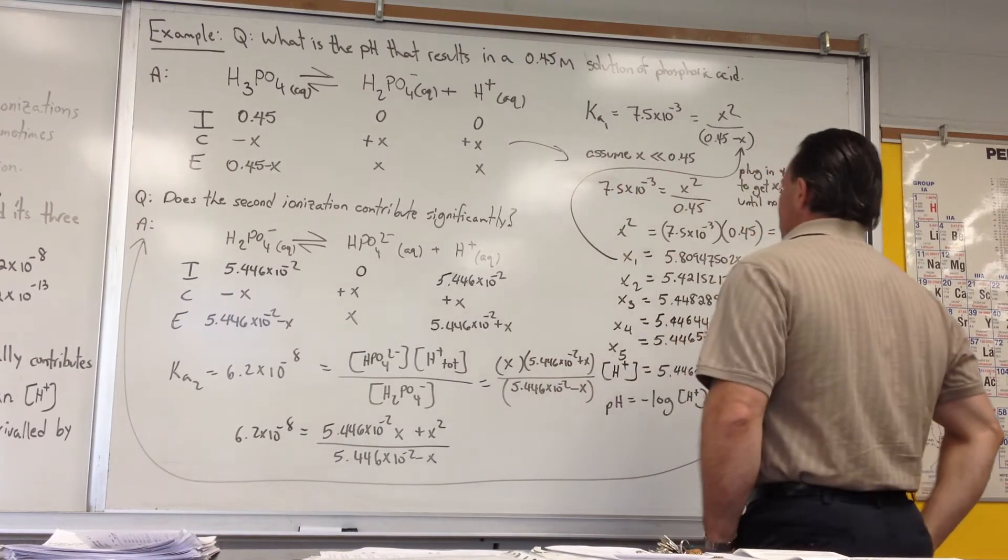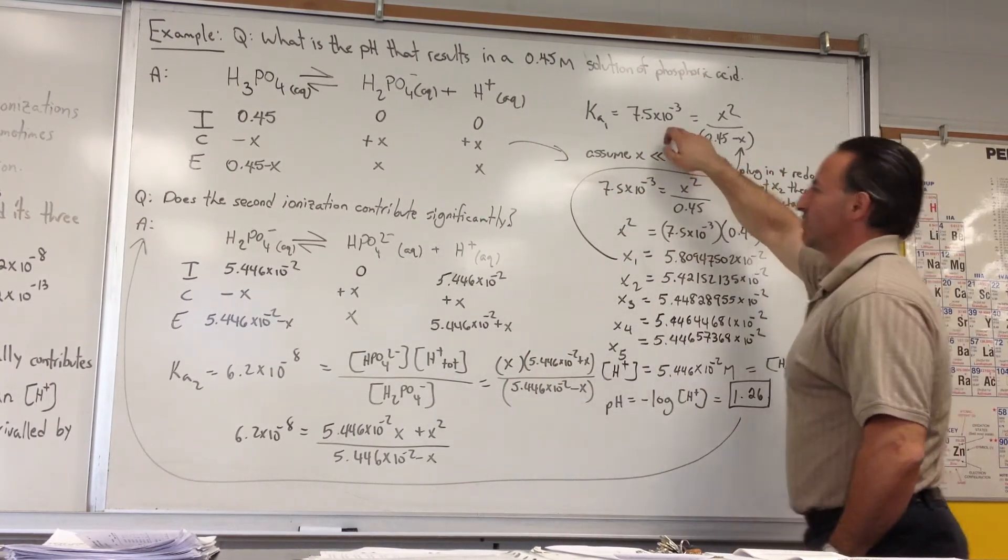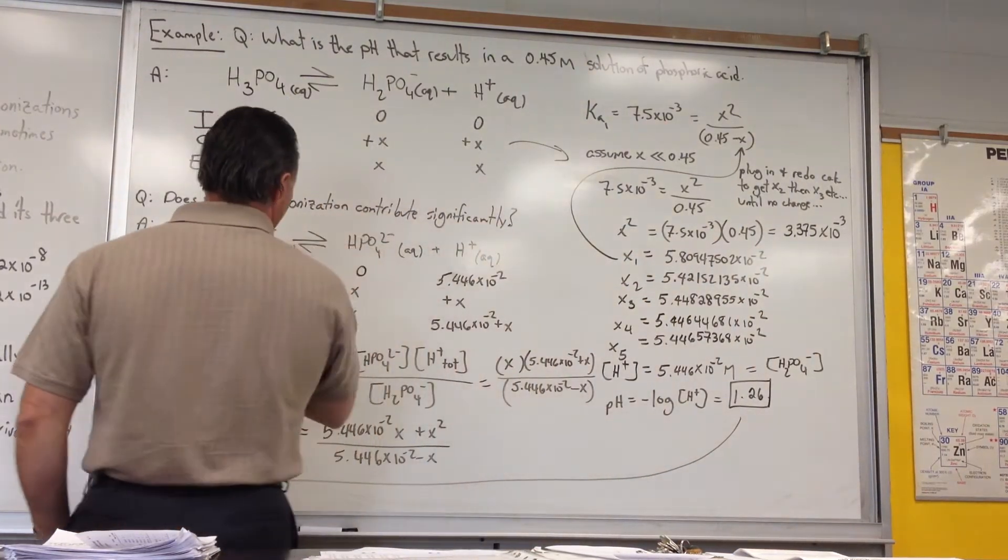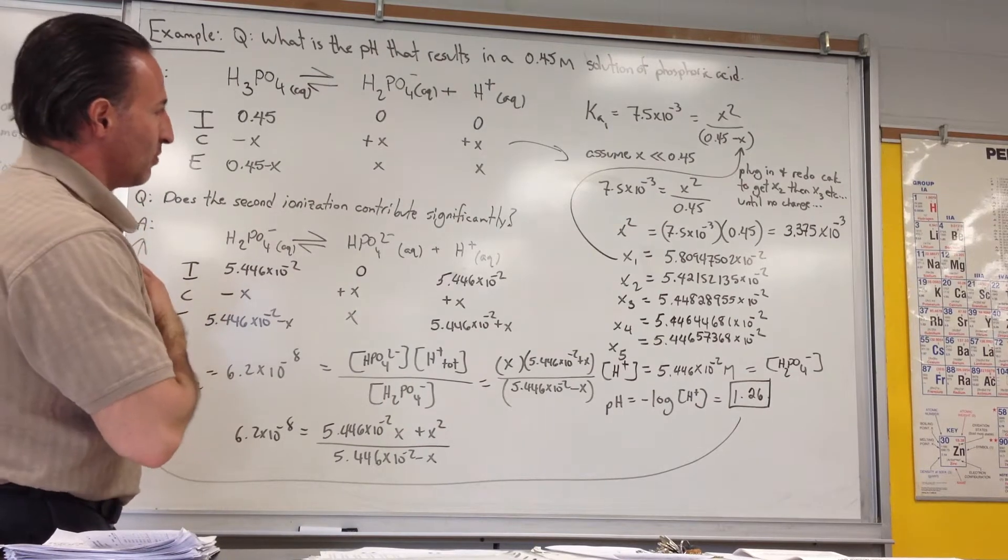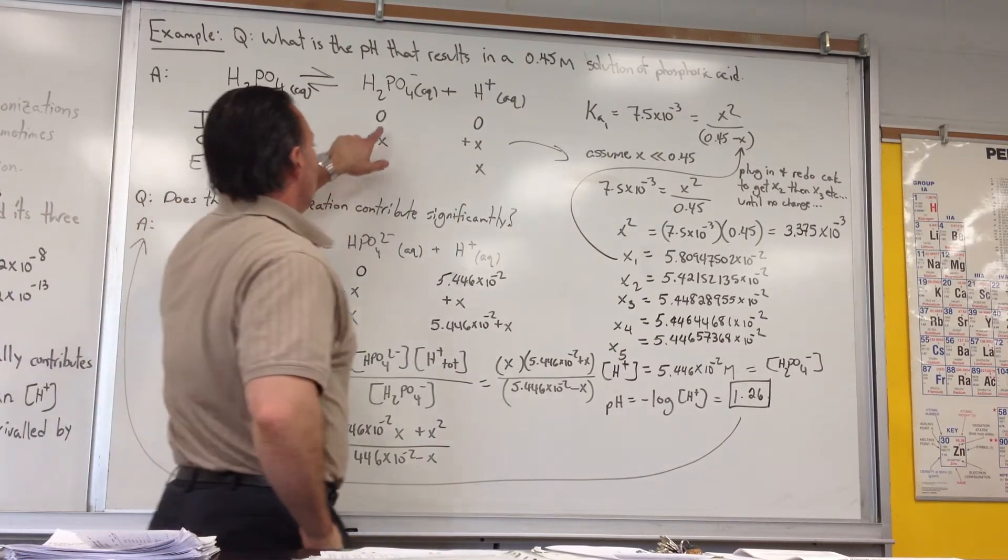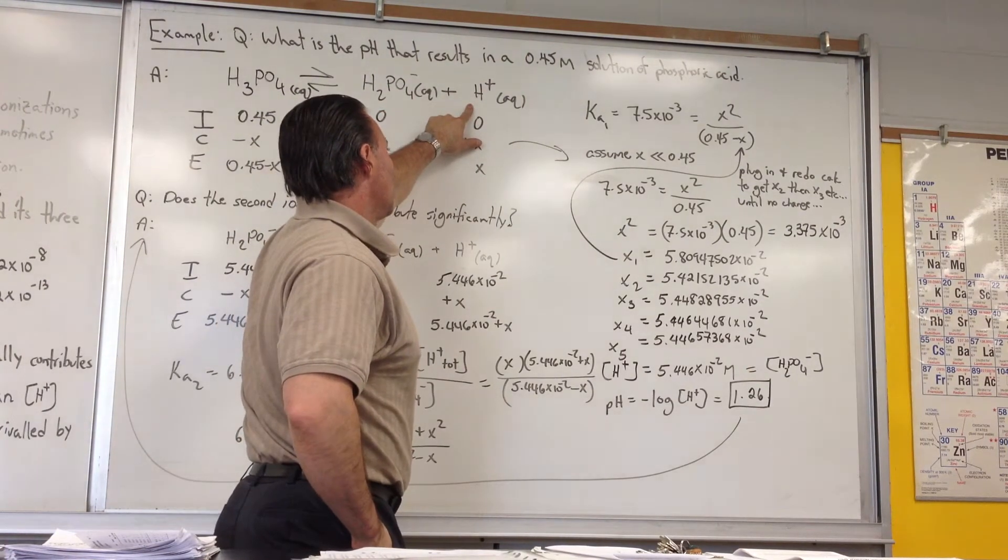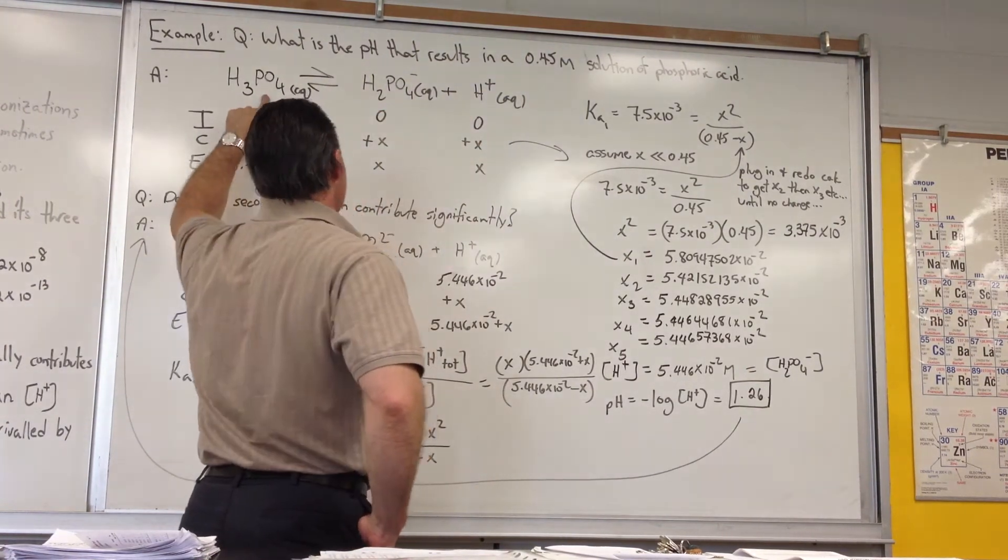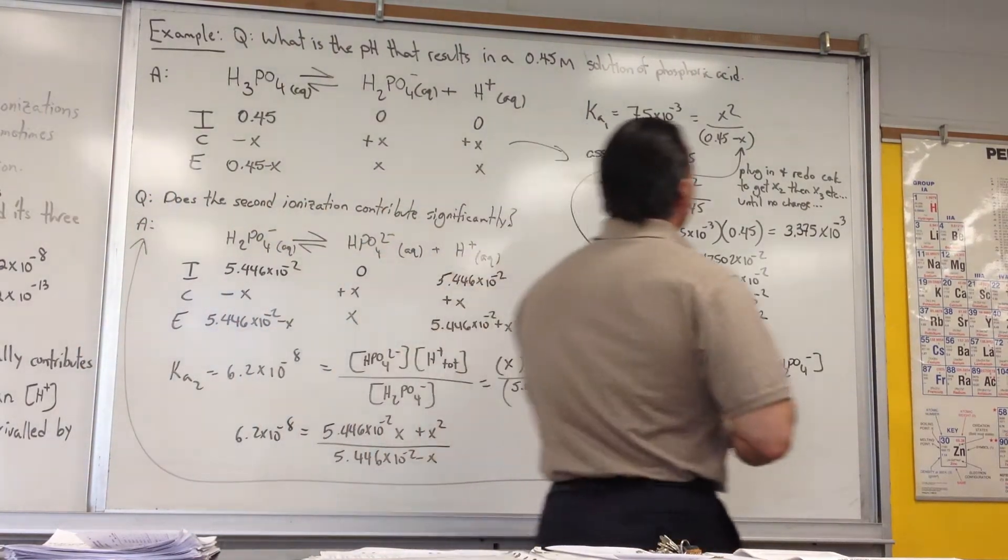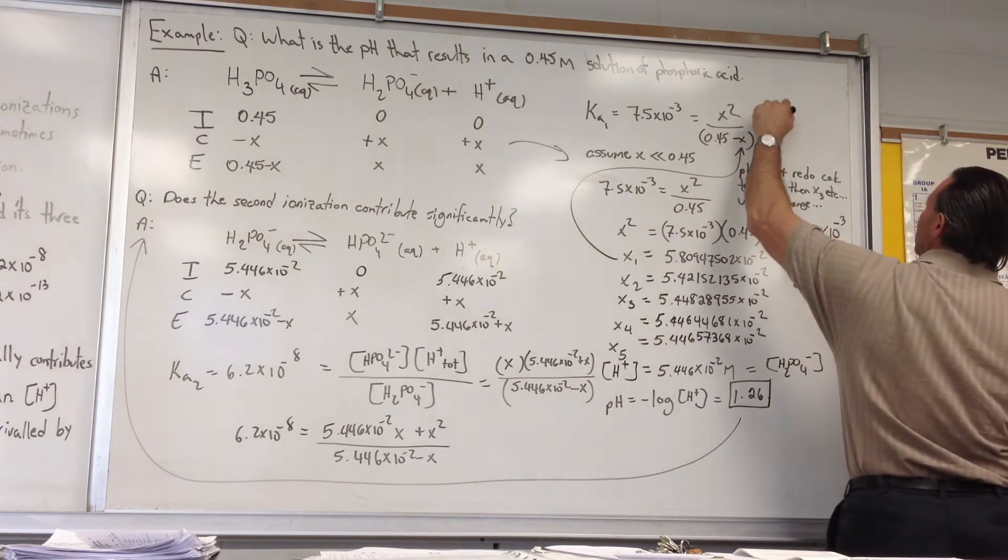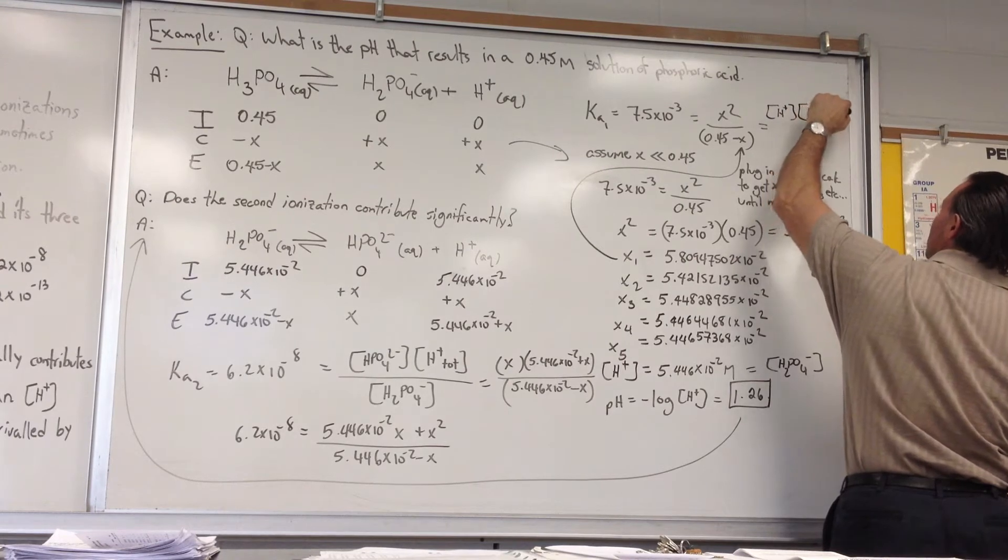So we set up an equilibrium equation: 7.5 times 10 to the minus 3, which is the first ionization constant of phosphoric acid, is equal to X squared over 0.45 minus X. That is the concentration of dihydrogen phosphate times the concentration of hydrogen ion divided by the concentration of phosphoric acid. I think by now you understand what that equilibrium means.